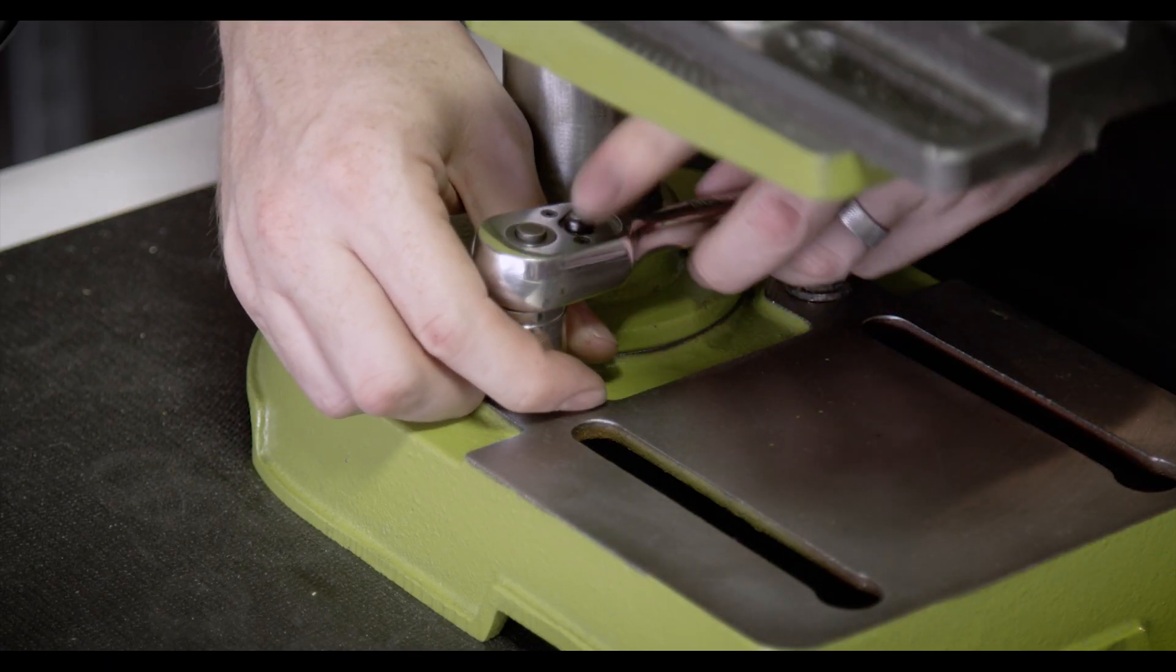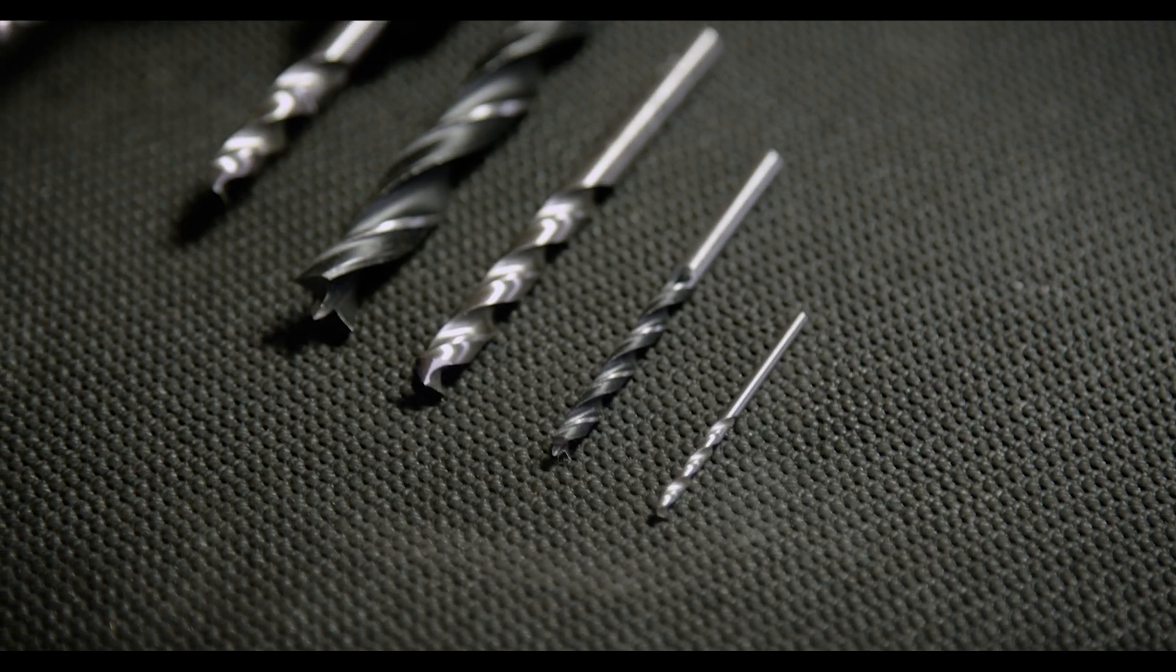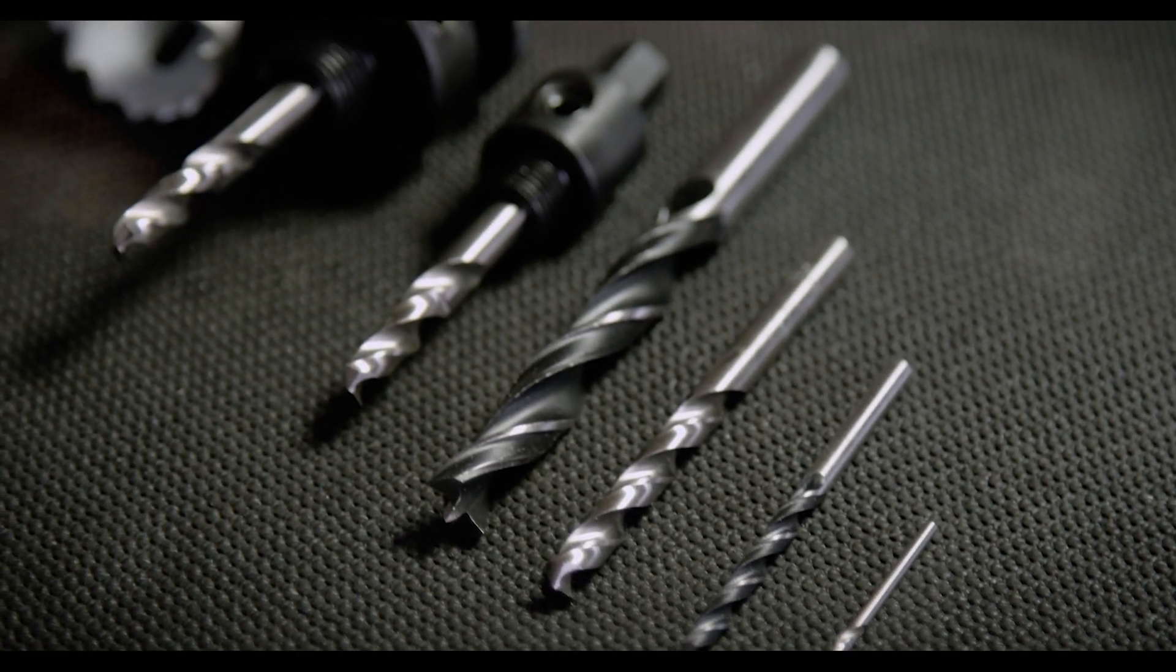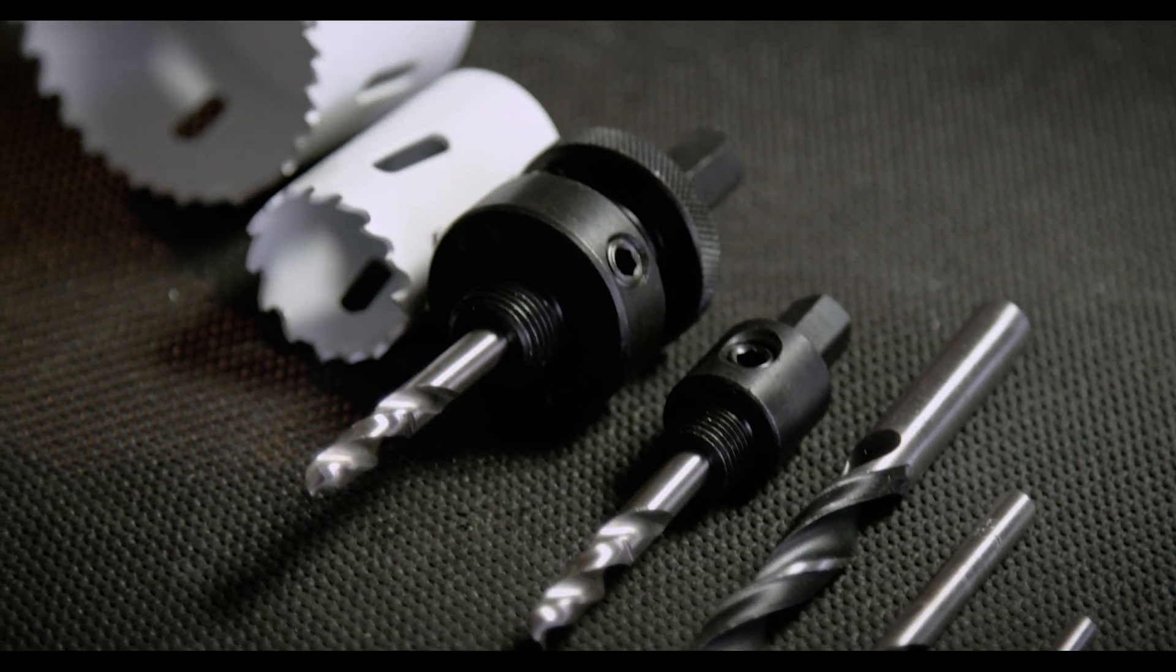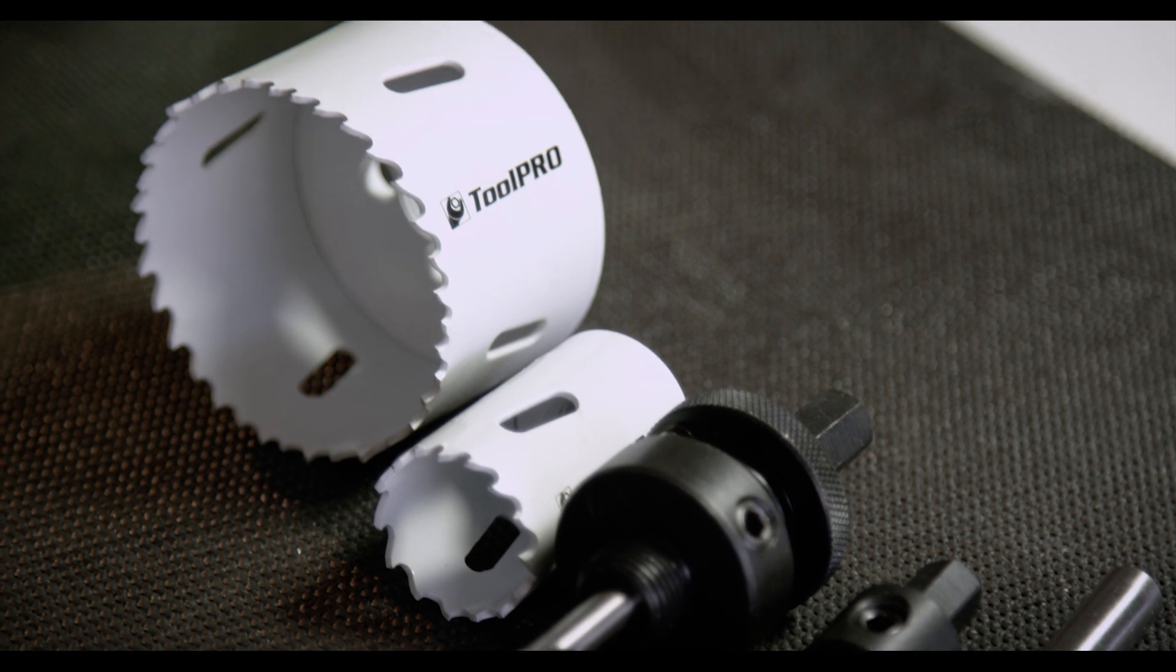With your drill press set up and secured to the workbench, choose the correct type of drill bit for the material you're working on. The only material not suitable for use in a drill press is masonry. For everything else, follow a speed guide to determine the correct RPM for your project.